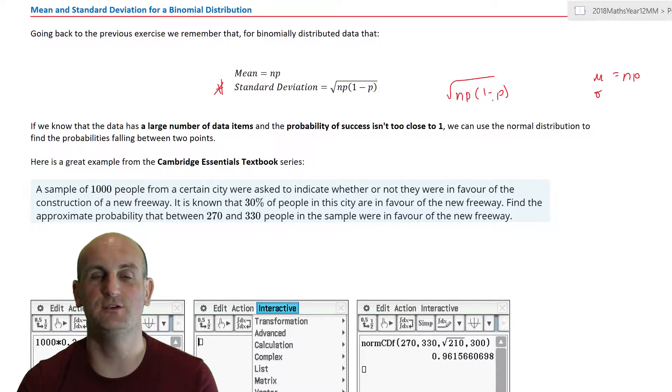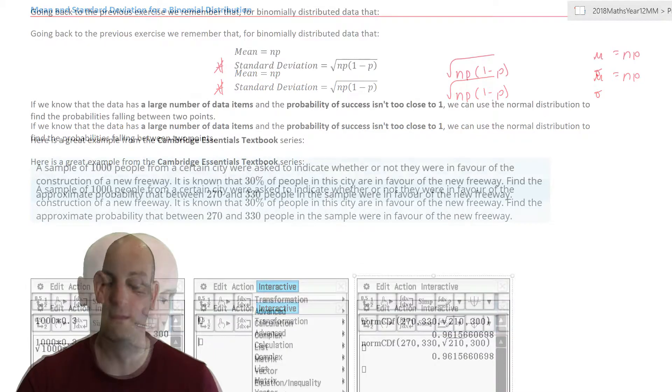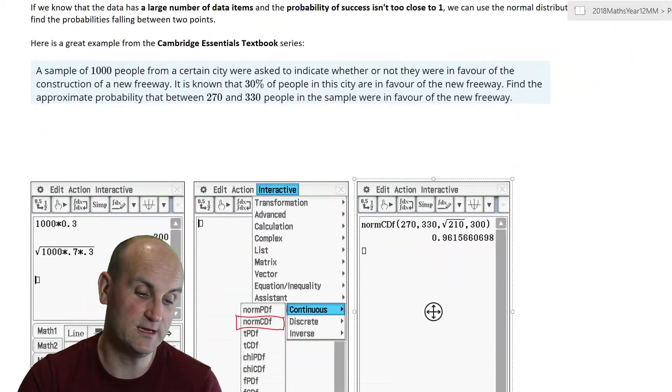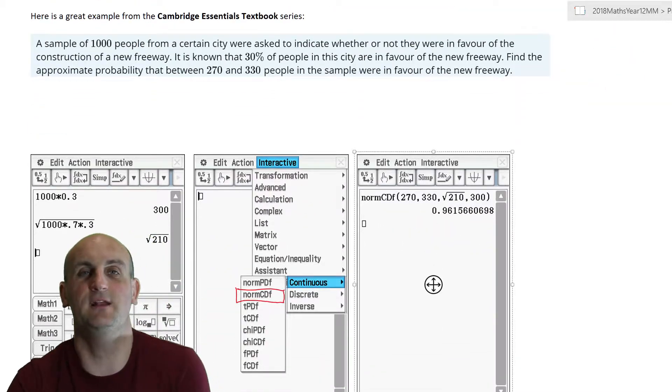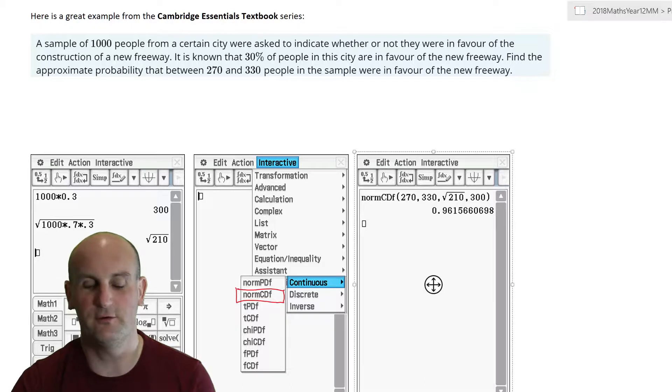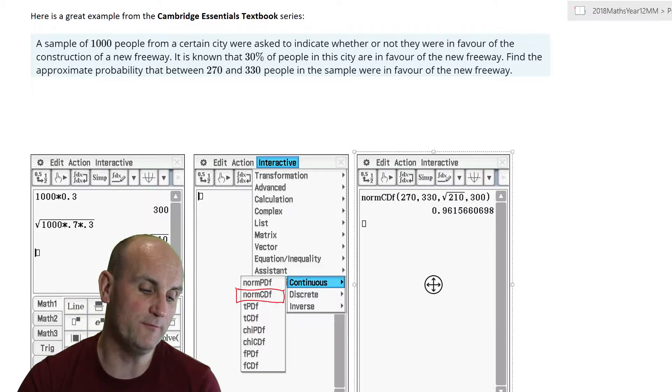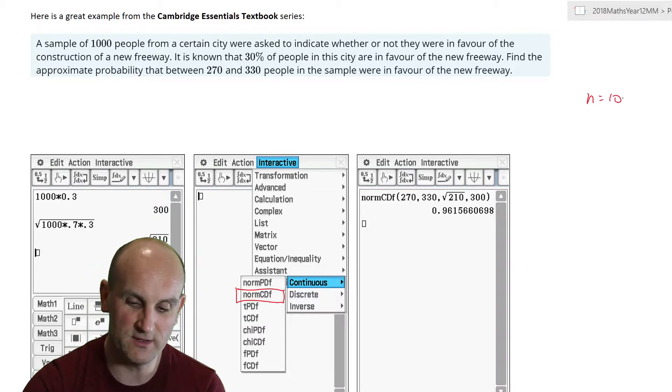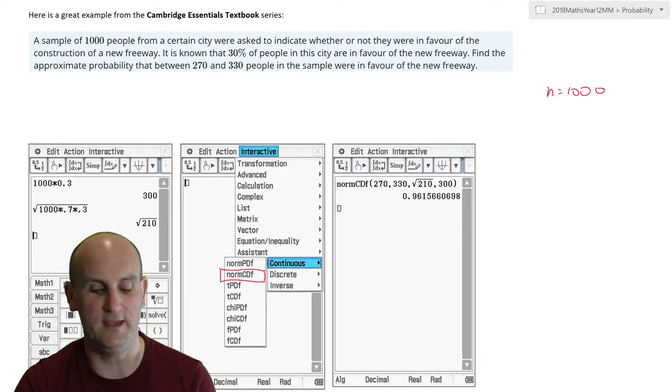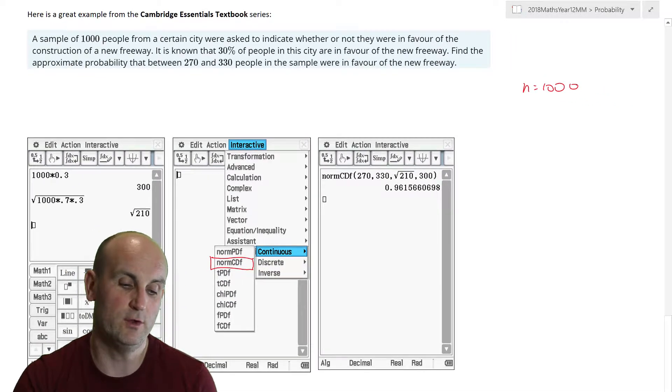So for a binomial distribution, where we have successes and failures, if I know the number of trials that have happened and the probability of success, I can now use the normal distribution to find all sorts of probabilities. And here is an example from the Cambridge Essentials textbook series, which as I say, pretty much every lesson I'm using to teach my kids. And as these lessons are primarily for the kids and anyone on YouTube who happens to stumble across and find them, then it's a really, really good resource. So a sample of 1,000 people, hold on a moment, 1,000 people, that seems to suggest that my value of n might be 1,000.